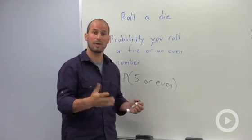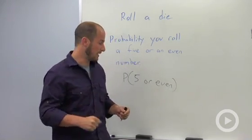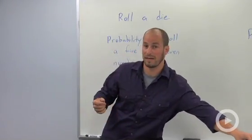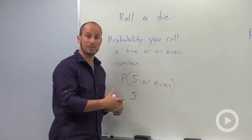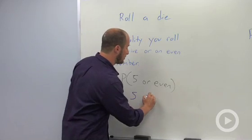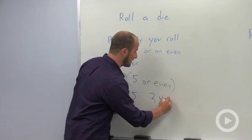And for this one I just want to write out what our potential outcomes could be. So obviously we roll a five, that's going to work. So we could roll a five or an even number. So our potential even numbers are just two, four, and six.